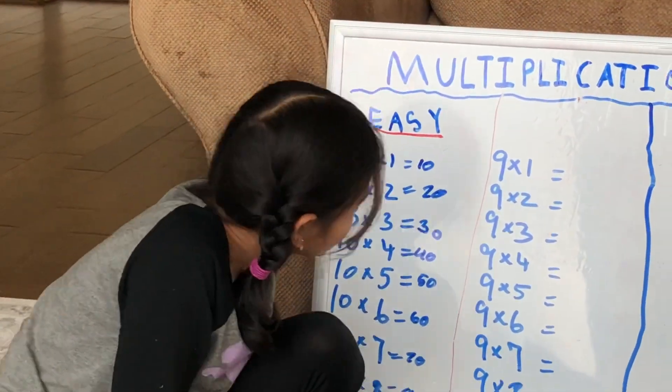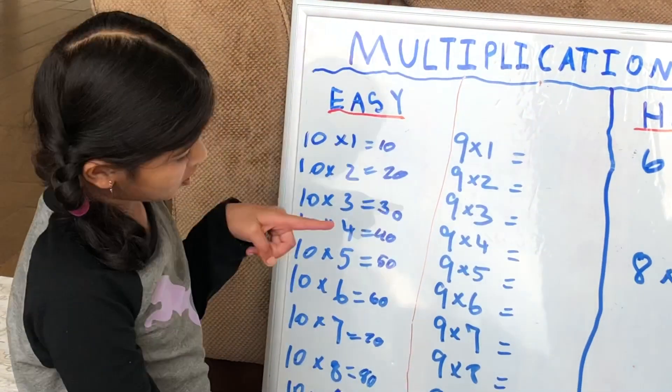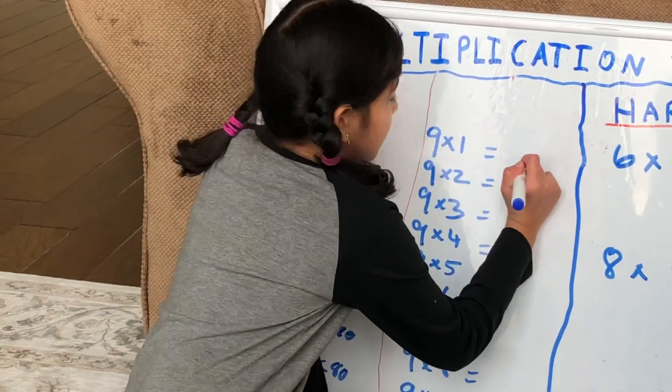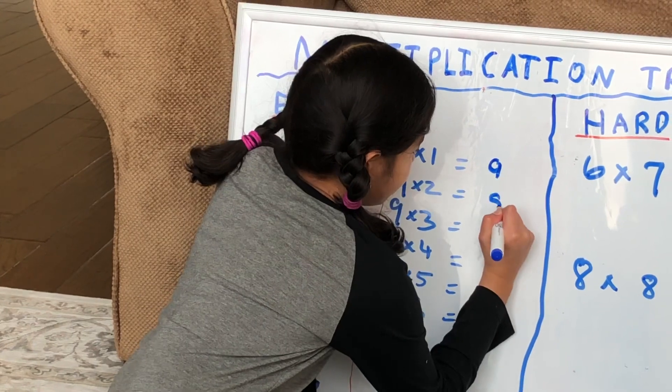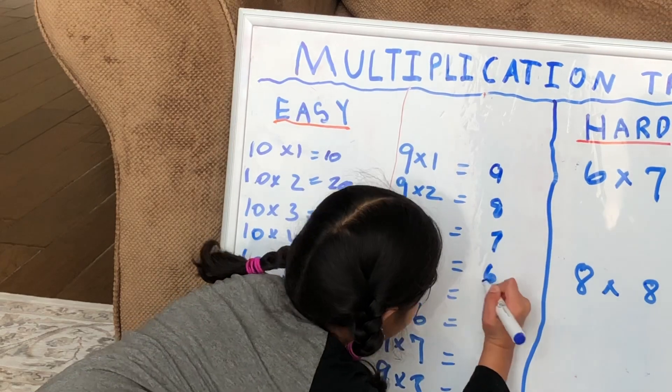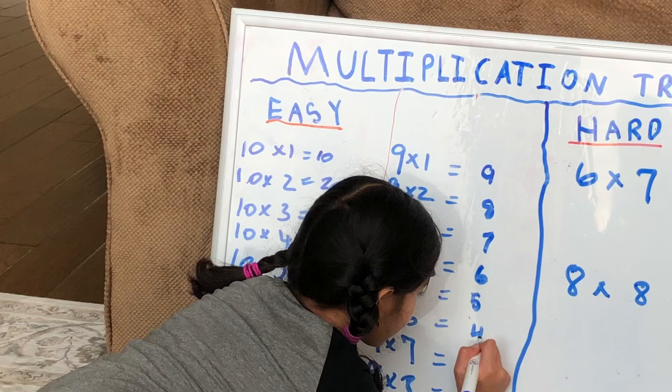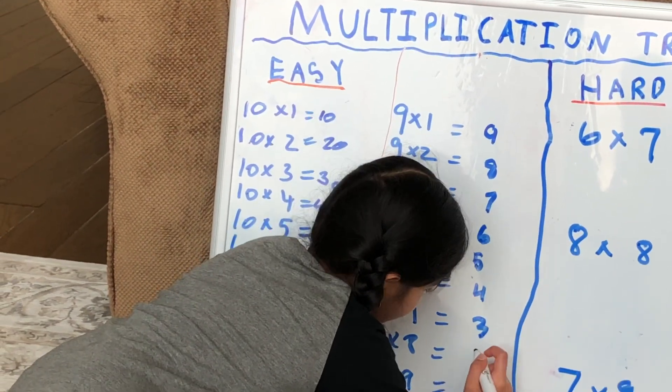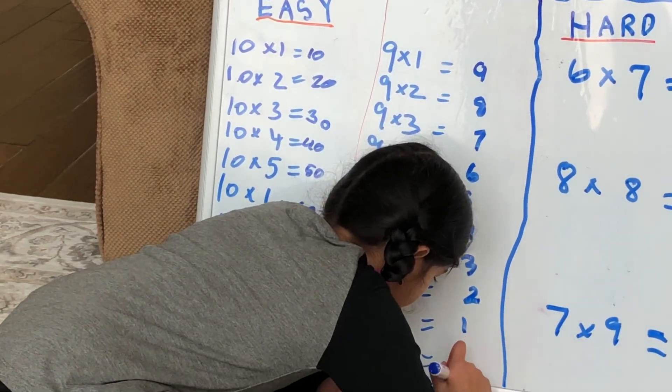Let's move on to the 9s, because you finished the 10s. For 9s, in the tens place you do 0, 1, 2, 3, 4, 5, 6, 7, 8, 9. In the ones place, you start from 9 and count down: 9, 8, 7, 6, 5, 4, 3, 2, 1, 0.